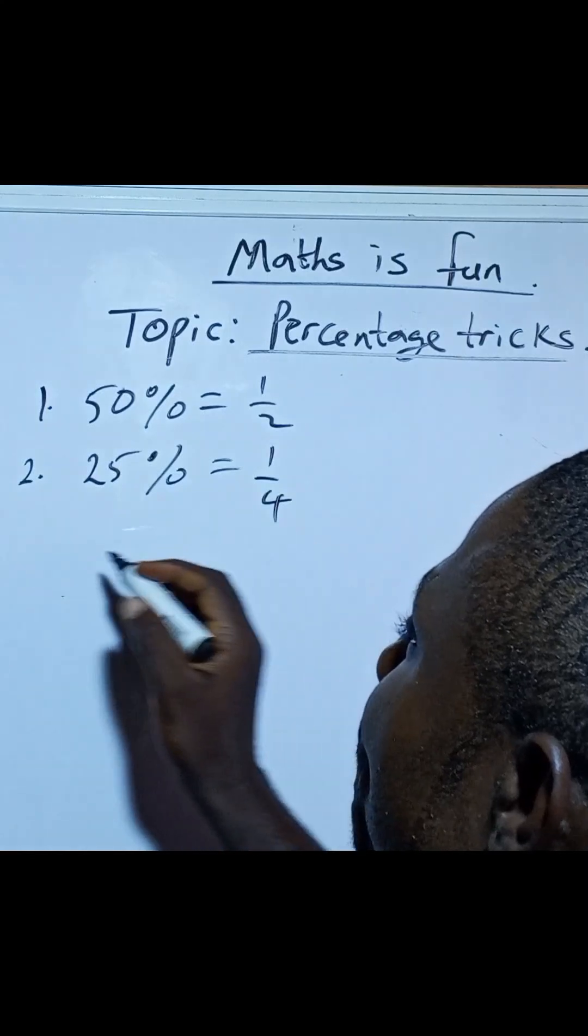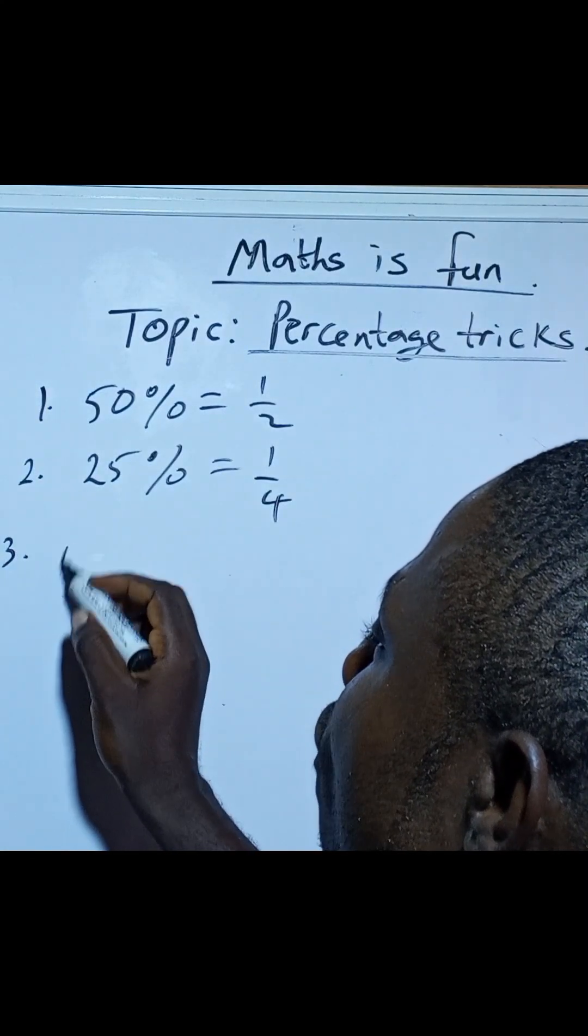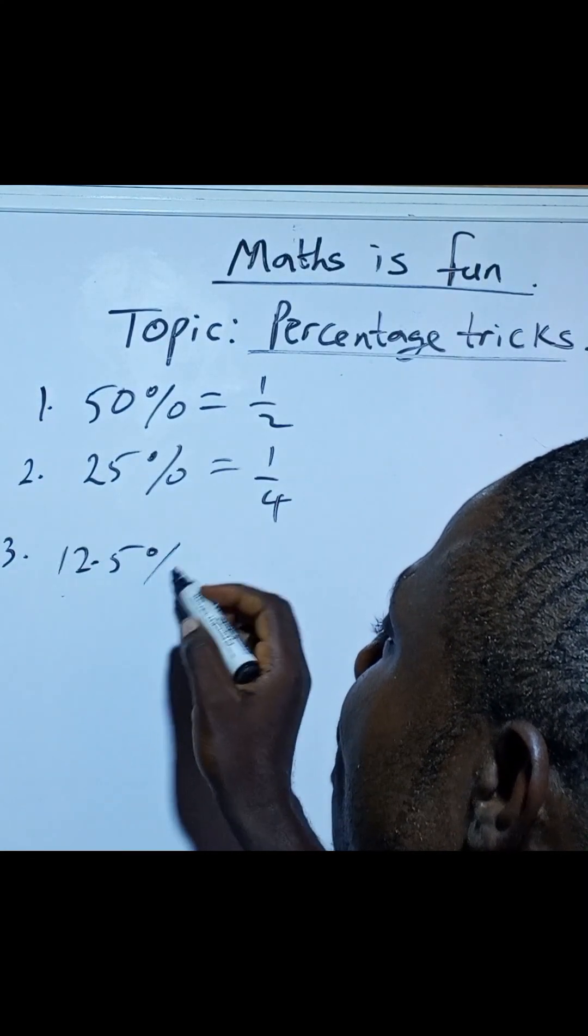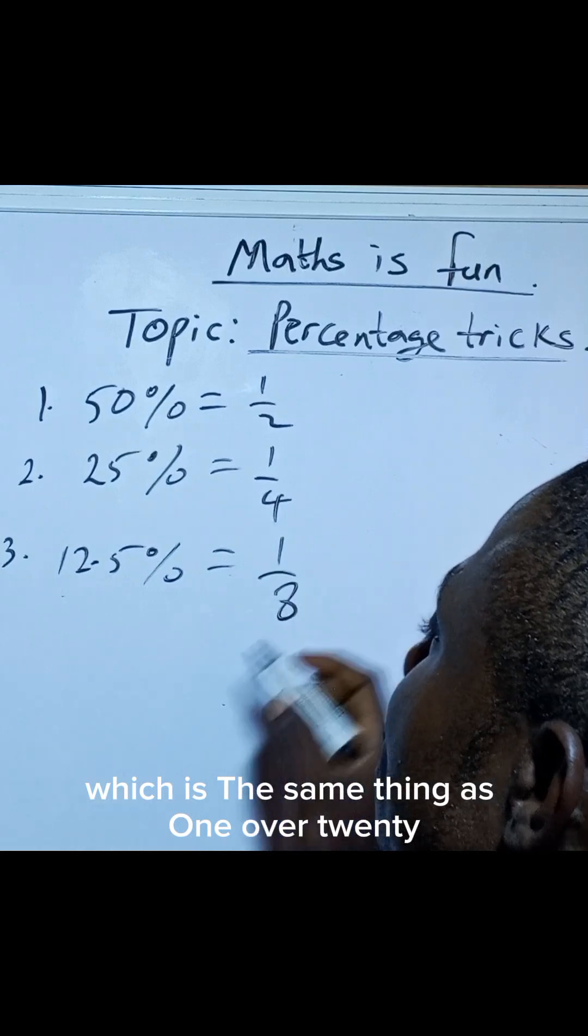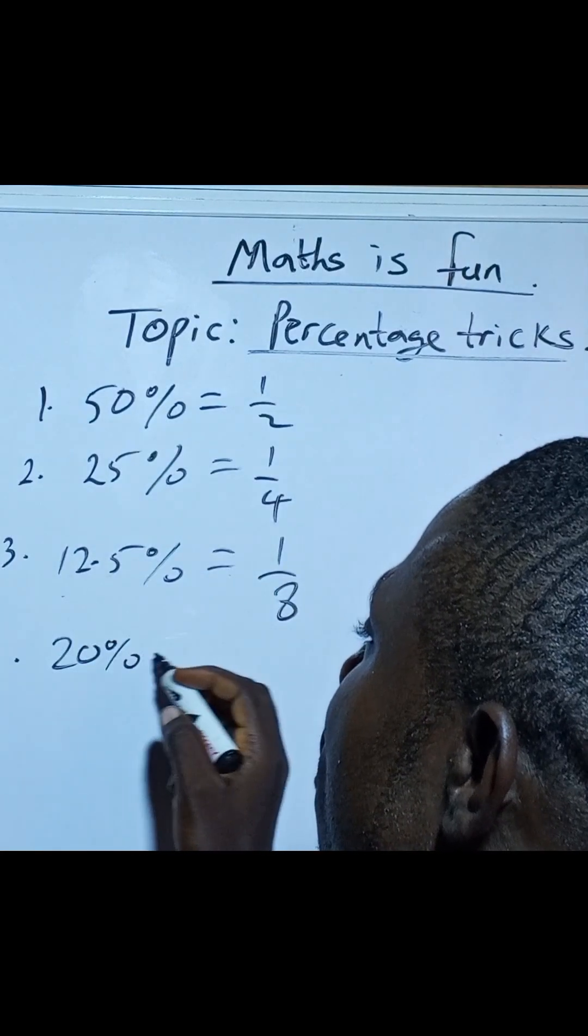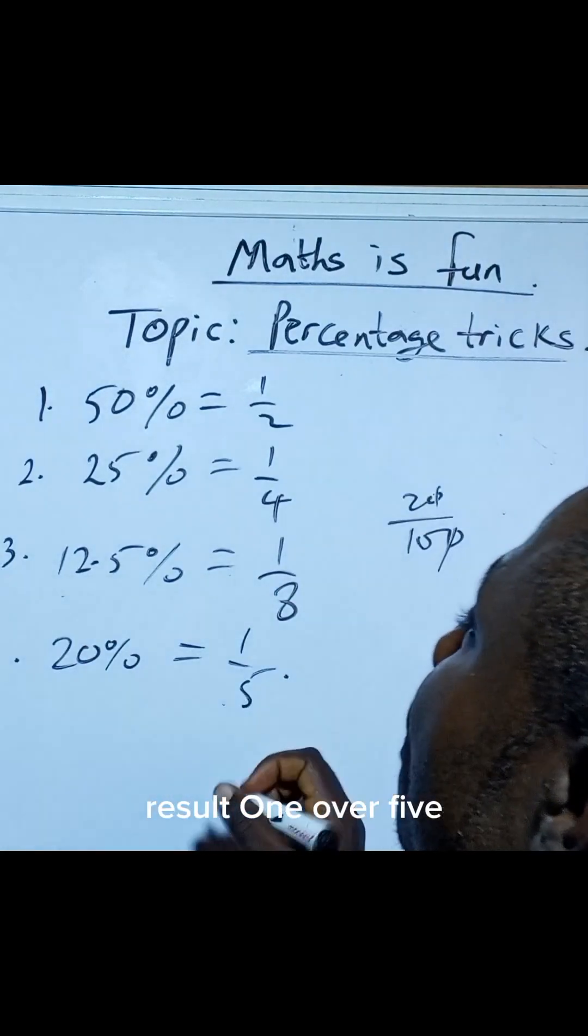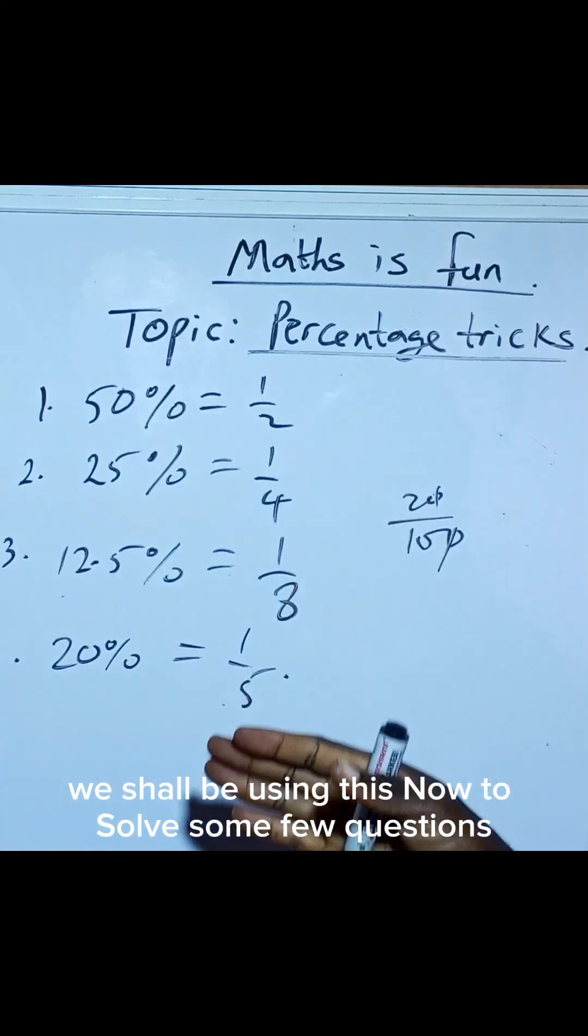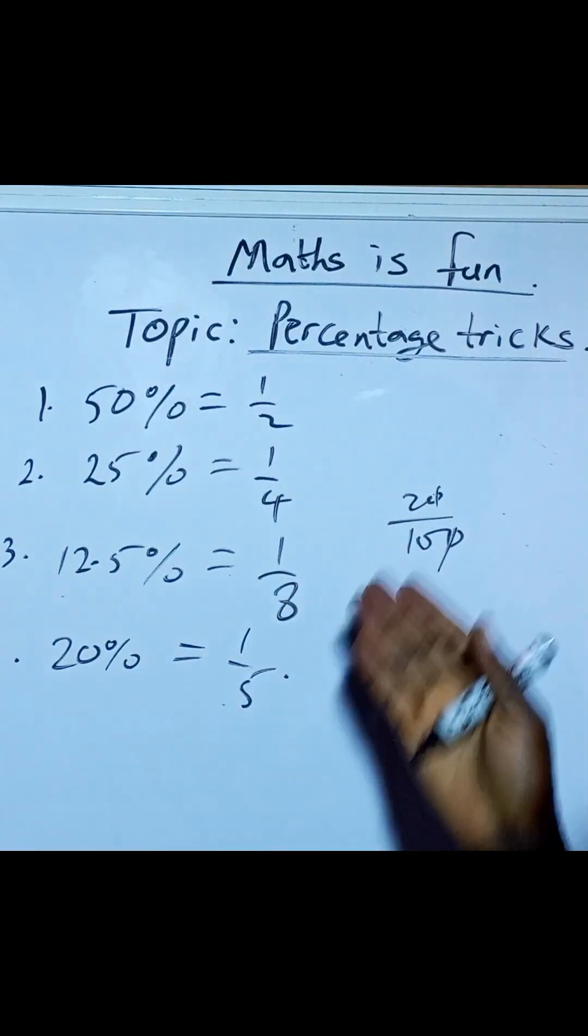25% is the same thing as one quarter. We have 12.5 percent, which is the same thing as one over eight. 20 percent is one over five. So we shall be using these now to solve some questions.